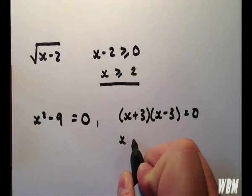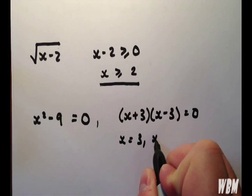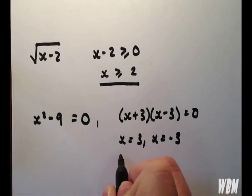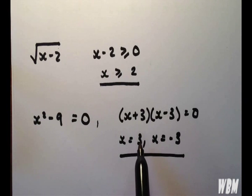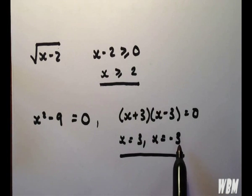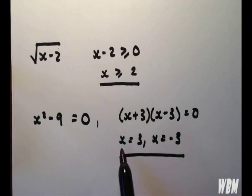Solving this gives us that we know that we can't include the numbers 3 or minus 3 into our domain.